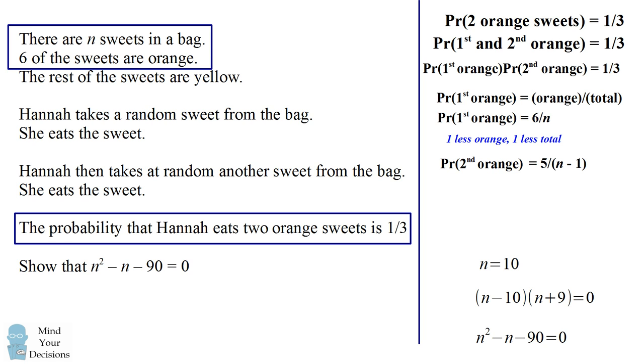So let's check if this actually works out. If she draws an orange sweet on the first draw that will be 6 over 10, and then the second draw will be 5 over 9. Multiplying these together we do in fact get 1 third. So there are 10 sweets in the bag of which 6 are orange, and in those conditions Hannah would draw 2 orange sweets in a row 1 out of every 3 times.